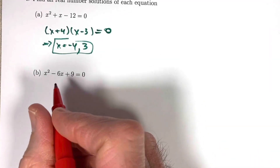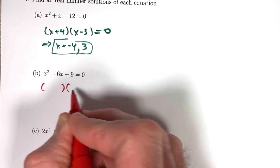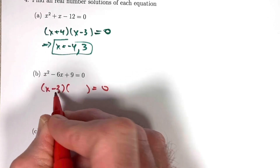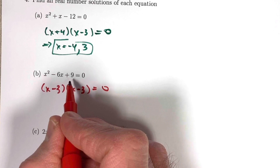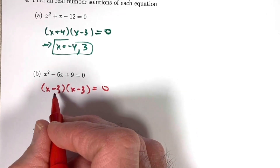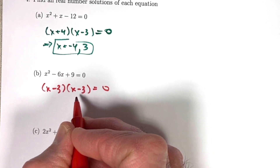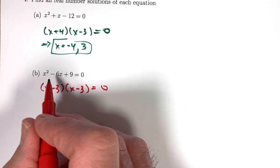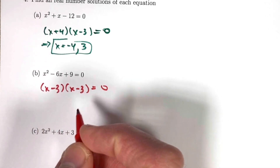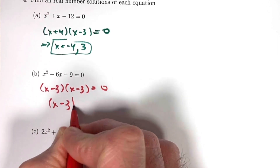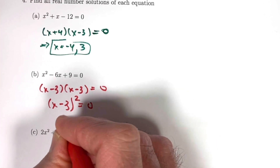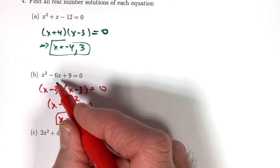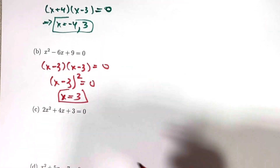Part B: x squared minus 6x plus 9 equals 0. This factors as x minus 3 times x minus 3, or x minus 3 quantity squared equals 0. There's just one real solution: x equals 3. If graphed, this parabola just touches the x-axis at one point instead of crossing it at two points.